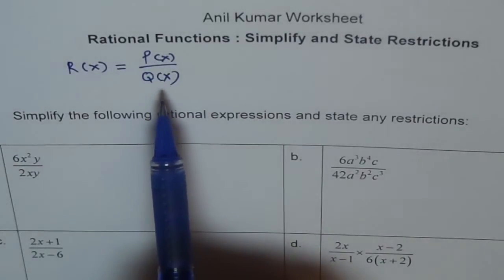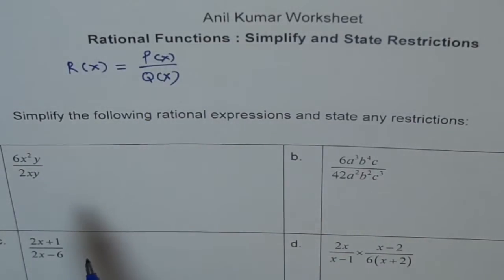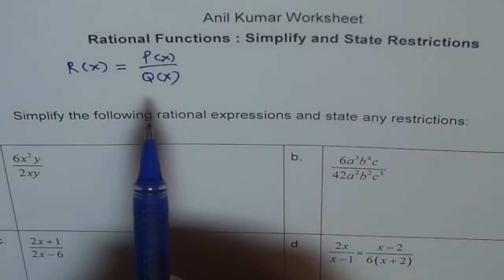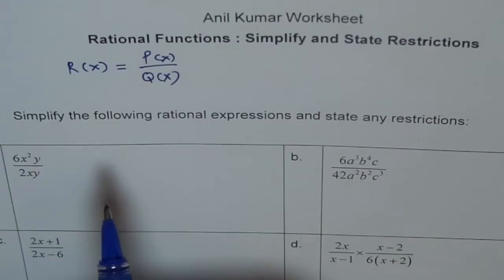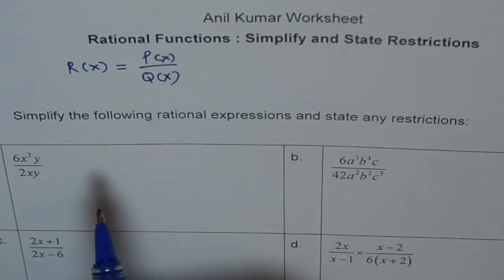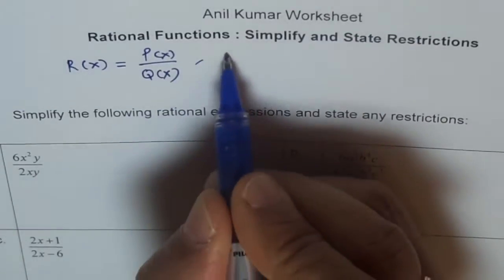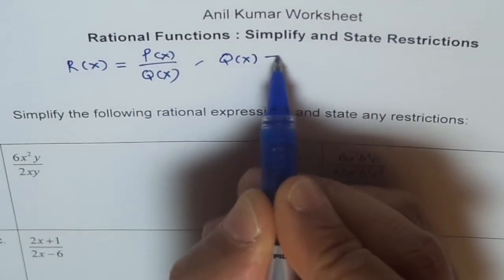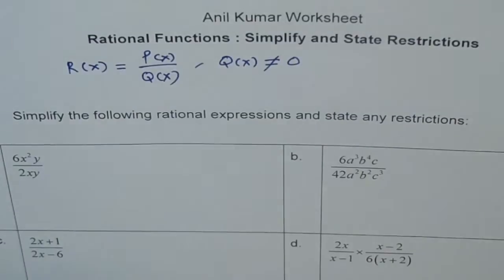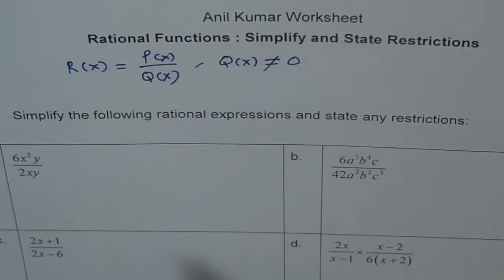This is a numerator and that is the denominator. In these rational functions, you will always see there will be a restriction. Why? Because the denominator cannot be zero. So we say Q(x) is not equal to zero — Q(x) could be anything but zero. You can't divide by zero. That is why a rational function will have a restriction.